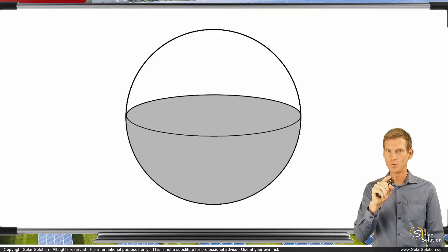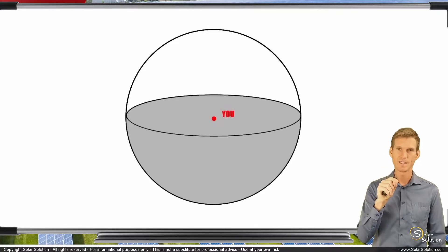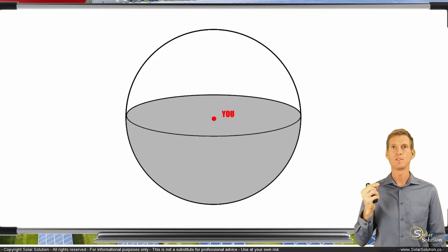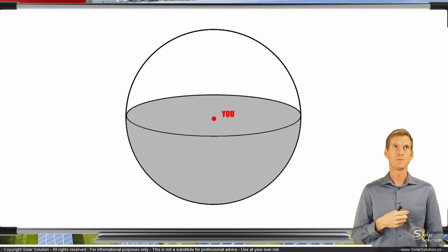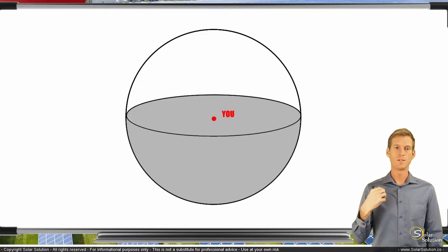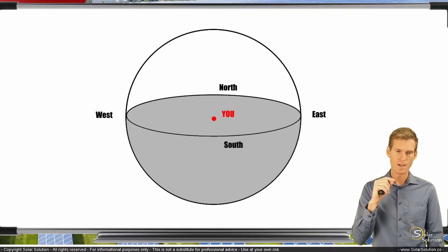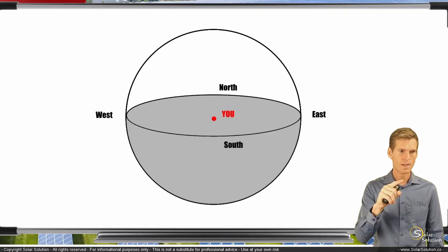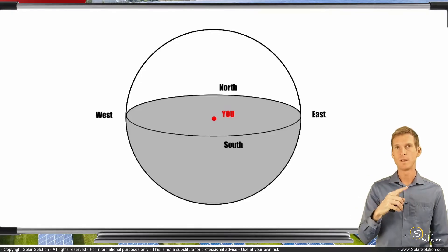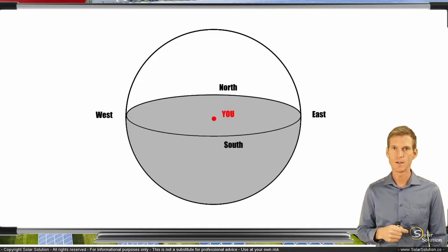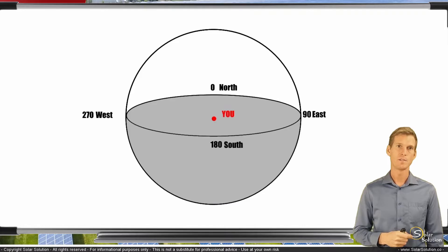Now let's place you right in the center of that sphere. So you are there in the center of the sphere, and now we want to have a reference system because we need to start somewhere. So we create the system of north, south, east, and west. We can also express these four directions by means of degrees, whereby north is zero degrees, south is 180, east is 90, and west is 270.